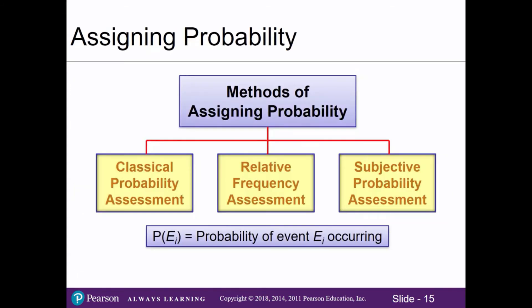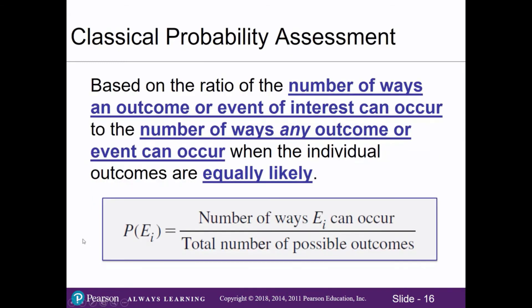Let's now talk about the three methods for assigning probability: classical, relative, and subjective. The symbol P(E) means big P for probability and capital E for our event of interest. Classical probability is based on the ratio of the number of ways an outcome or event can occur, and it assumes all individual outcomes are equally likely — for example, all six sides of a die are equally likely when rolled.